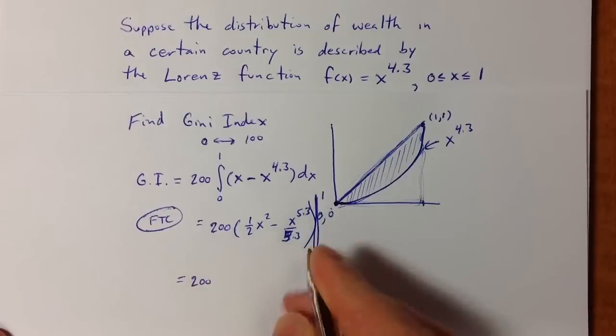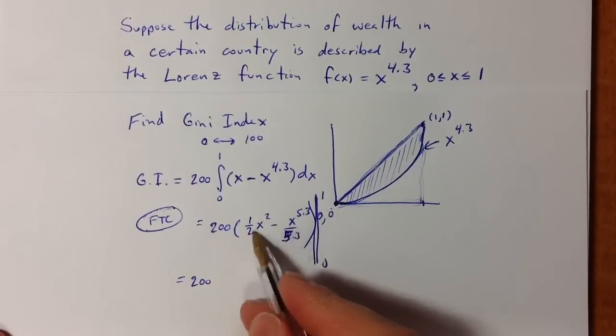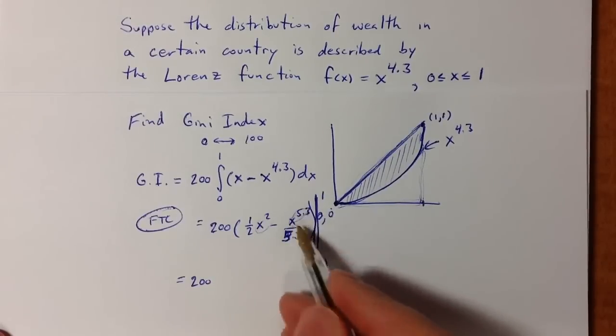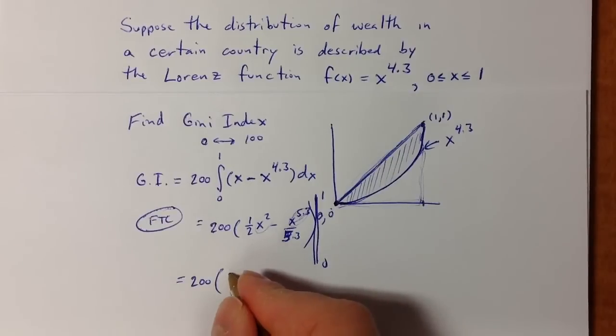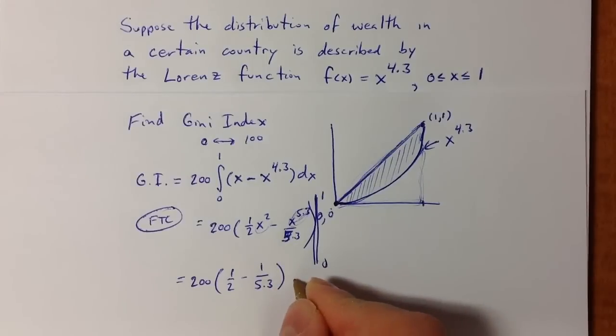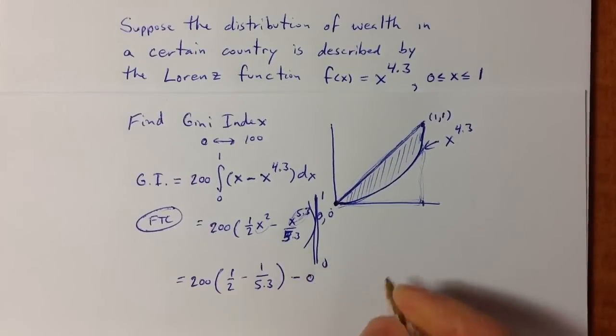Sorry, my notation got a little bit cramped here. But plugging in 1, well, 1 raised to any power is just going to be 1. So plugging in 1 gives us 1/2 minus 1/5.3.